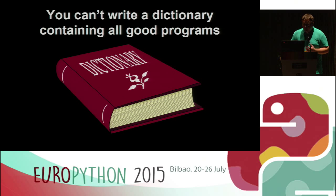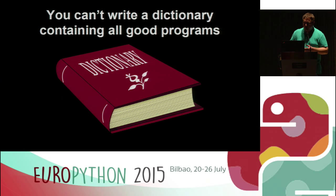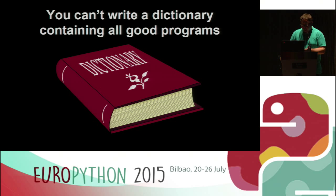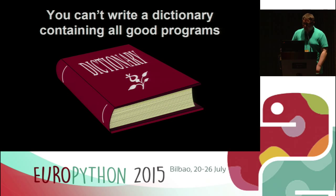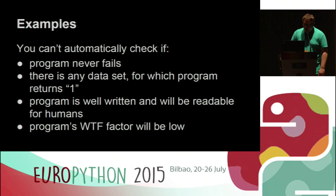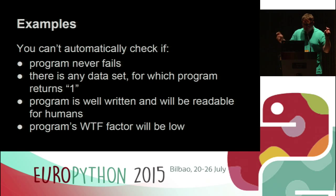For example, we can't write a program that will check if your program is correct. You can't get a tool where you search for your program and it tells you 'my web application is right here, it's correct, all good.' You also can't automatically verify if a program never fails, if a program returns some data, if it is well written — whatever that means — or the WTF factor.